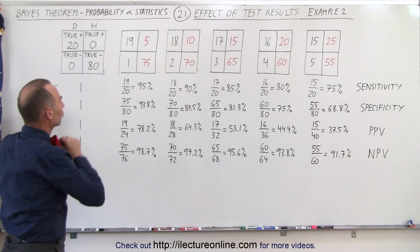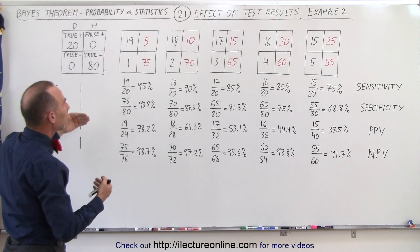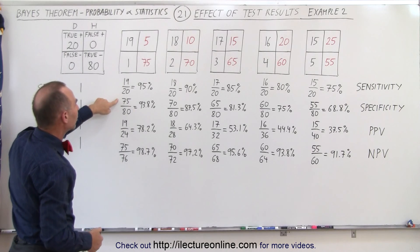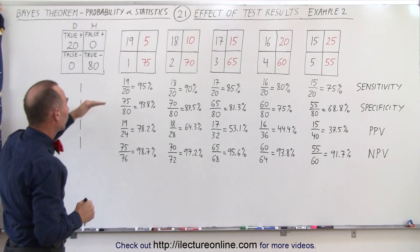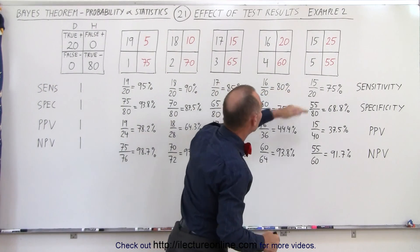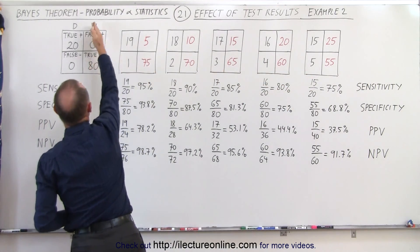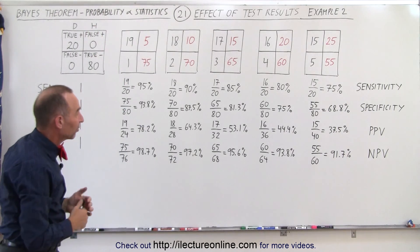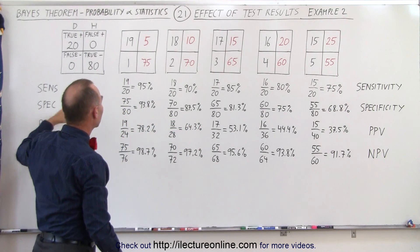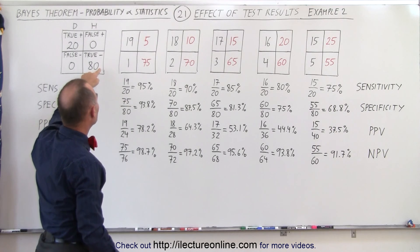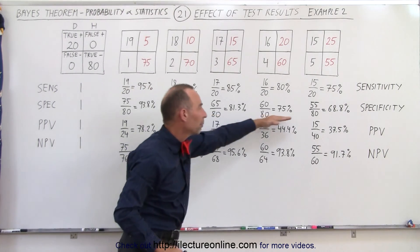The specificity, in this case, does change because now we also have false positives, and specificity depends upon the number of false positives. The greater the number of false positives, the smaller the number that are truly flagged as being negative. Notice that the numerator becomes smaller and smaller as fewer and fewer people test truly negative when they are healthy. The specificity is simply the ratio of the number of people that truly test negative divided by the total number of people that are negative, and in our sample that remains at 80.